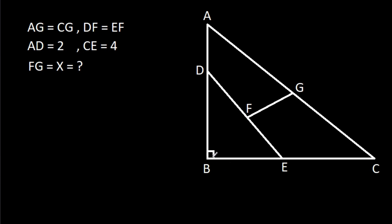We have been given a right angle figure in which AG is equal to CG and DF is equal to EF, and AD is 2, CE is 4, and FG is X. We have to find X.